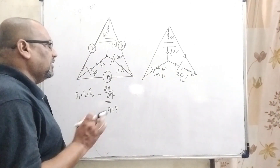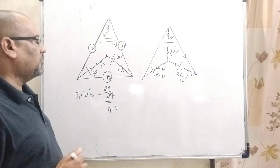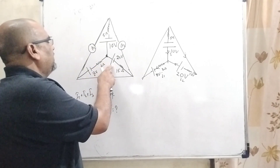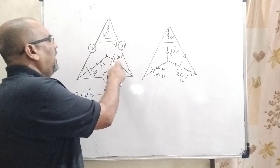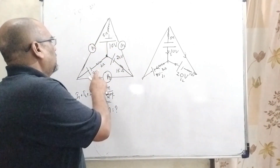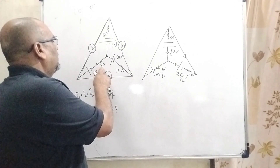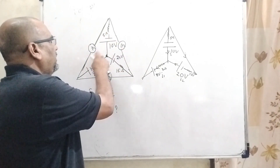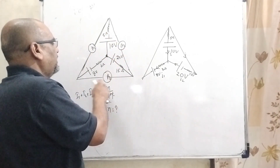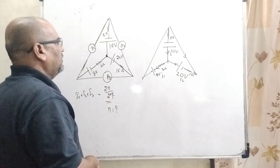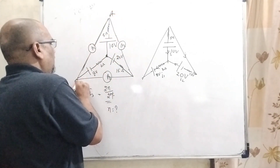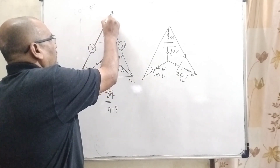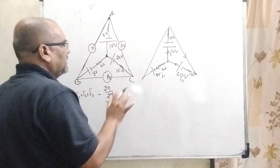First of all, we have to understand what the question says. We are given three batteries: 8 volt, 10 volt, and 20 volt, with resistances 3 ohm, 5 ohm, and 15 ohm respectively. Three ammeters are connected in this circuit. Let us label the vertices of this triangle A, B, and C.